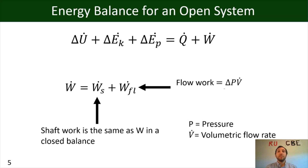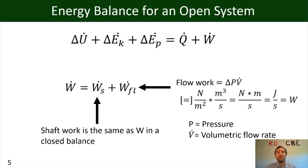The reason we now have flow work is because we have material entering and exiting the system. You may wonder whether the units of flow work actually give an energy per time term — and they do. The units work out to give you watts.